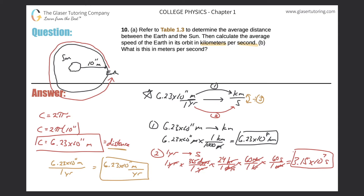Now all we have to do is take step 1's answer — 6.23 times 10 raised to the 8 kilometers — and divide that by 3.15 times 10 raised to the 7 seconds. When I do this I get kilometers per second. Plugging that into the calculator, this comes out to about 19.8 kilometers per second. That is the answer to Part A.